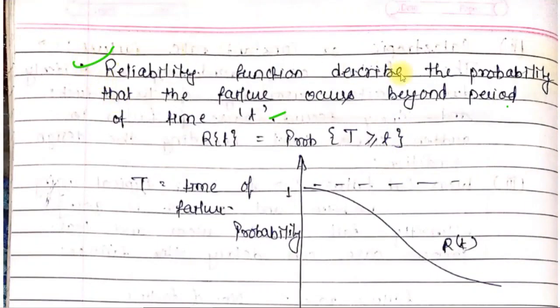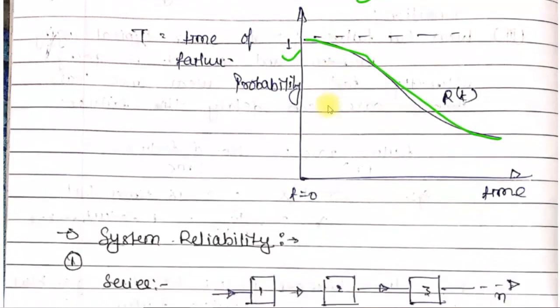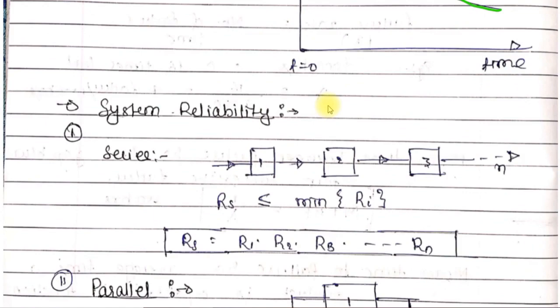The reliability function describes the probability that any product will work or not after its specific time period. If you plot probability versus time, the reliability function curve will look like this. At time t=0, the probability is one, which means your product will always work 100% at this time.